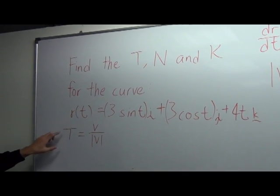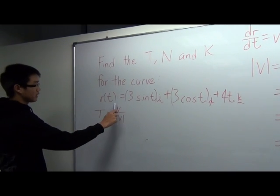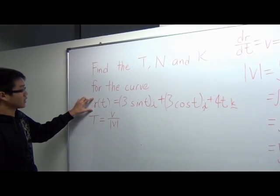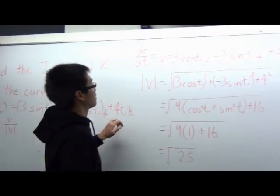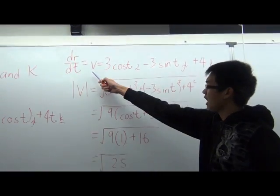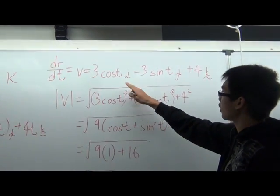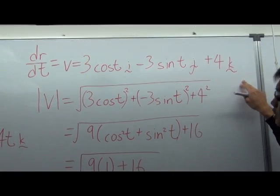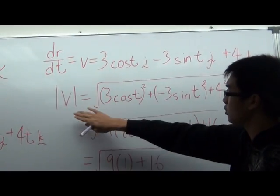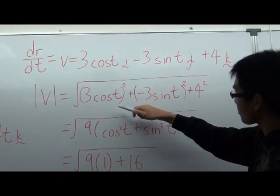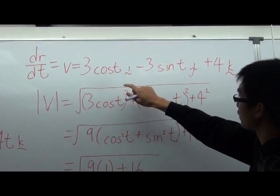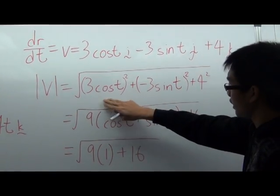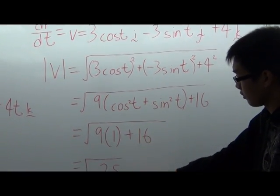We know that T equals V over the magnitude of V. So to get V, we have to differentiate this function. So dr/dt equals 3 cos(t) i minus 3 sin(t) j plus 4k. Now we find the magnitude of V by squaring each component i, j, and k and taking the square root of the whole thing. In the end we get 5.